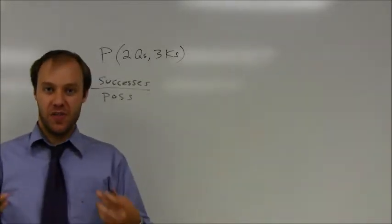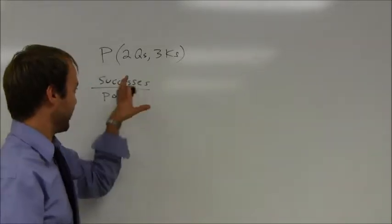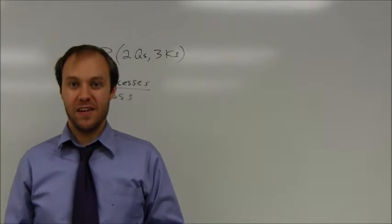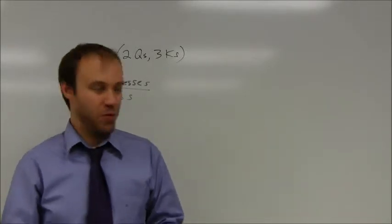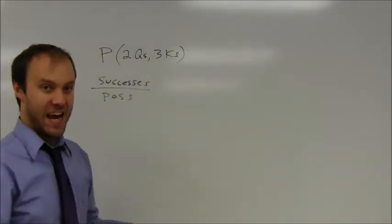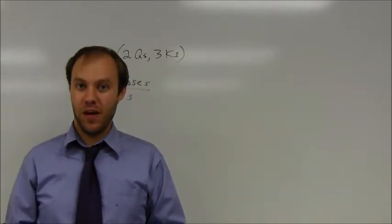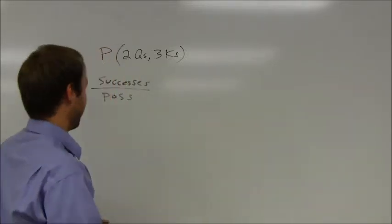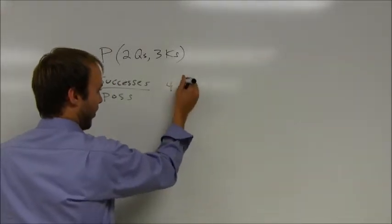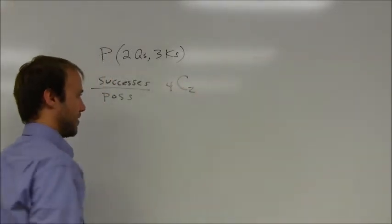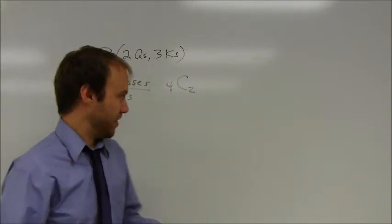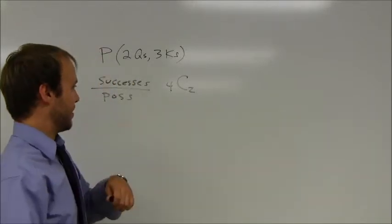Well, my successes involve two things. I have to figure out how many ways I can pull out two queens. Well, it's actually pretty simple because a deck of cards only has four queens. I just want to figure out how many different ways I can pull out two of those. Well, that's just the combination of four taken two at a time. And in this case, that is going to end up being six.